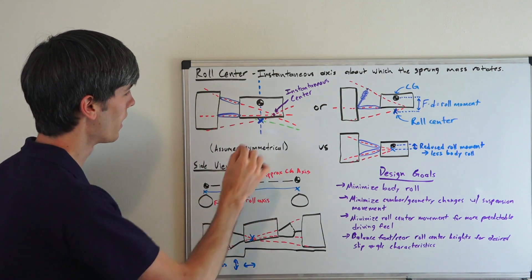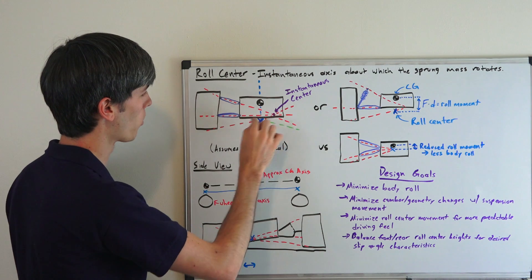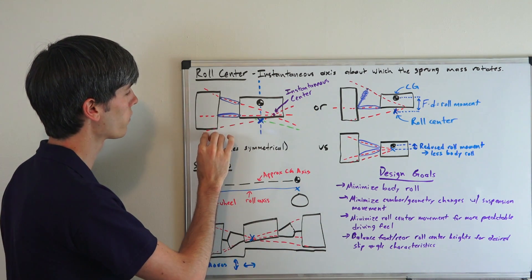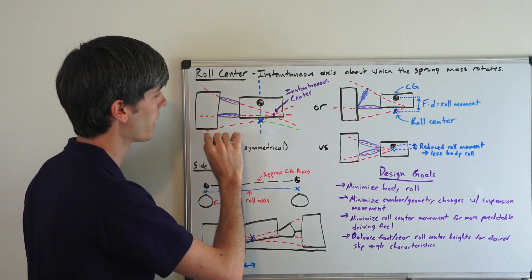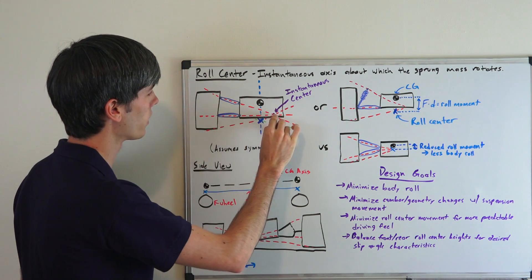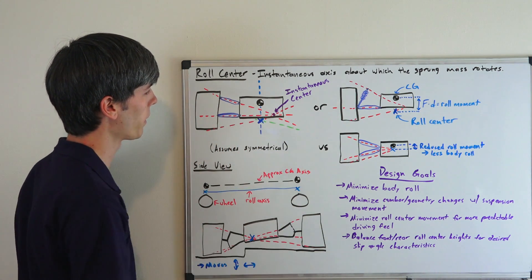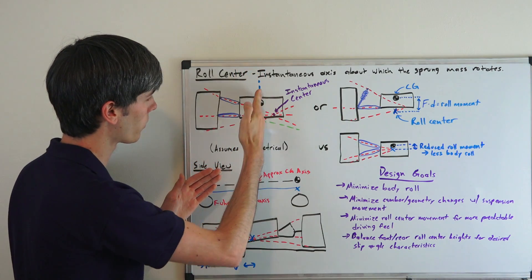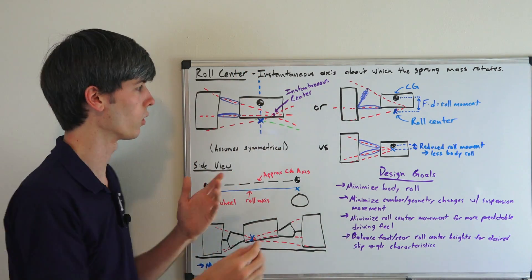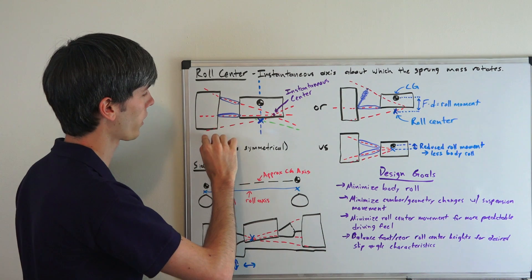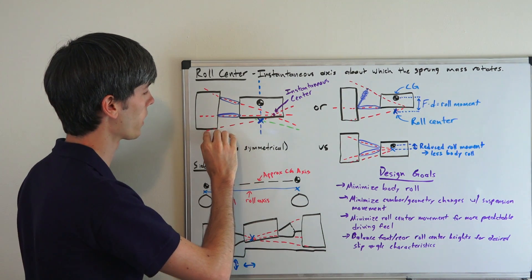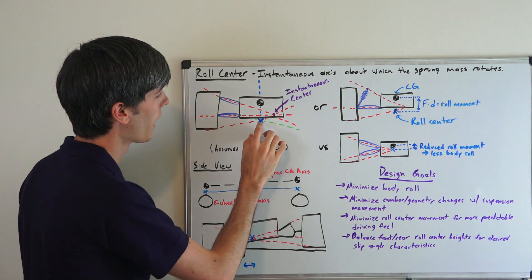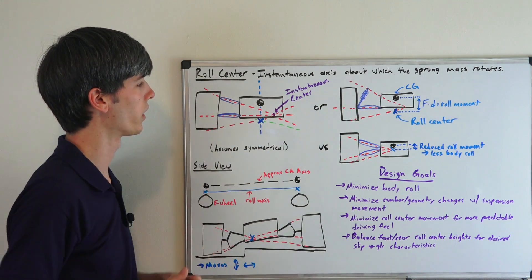It's only for one instant that this is defined, and so then you take the line from the bottom of the center of the wheel and you intersect that with the instantaneous center from those suspension arms. Then you take where the center of the vehicle — assuming that it's symmetrical — is, where that line intersects with the line connecting from the center of the tire to the instantaneous center, and that's going to be where your roll center is.